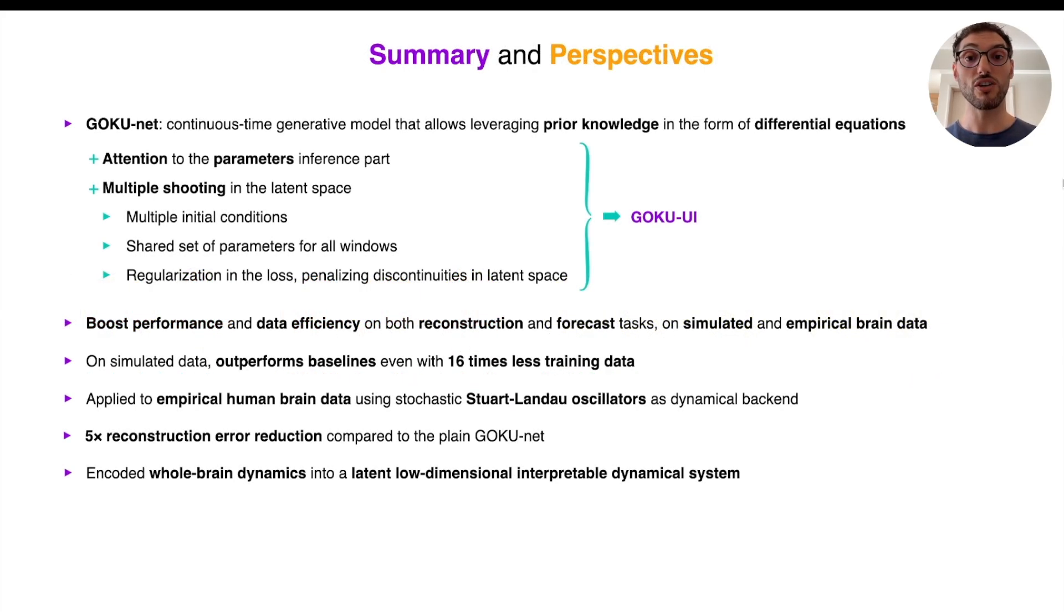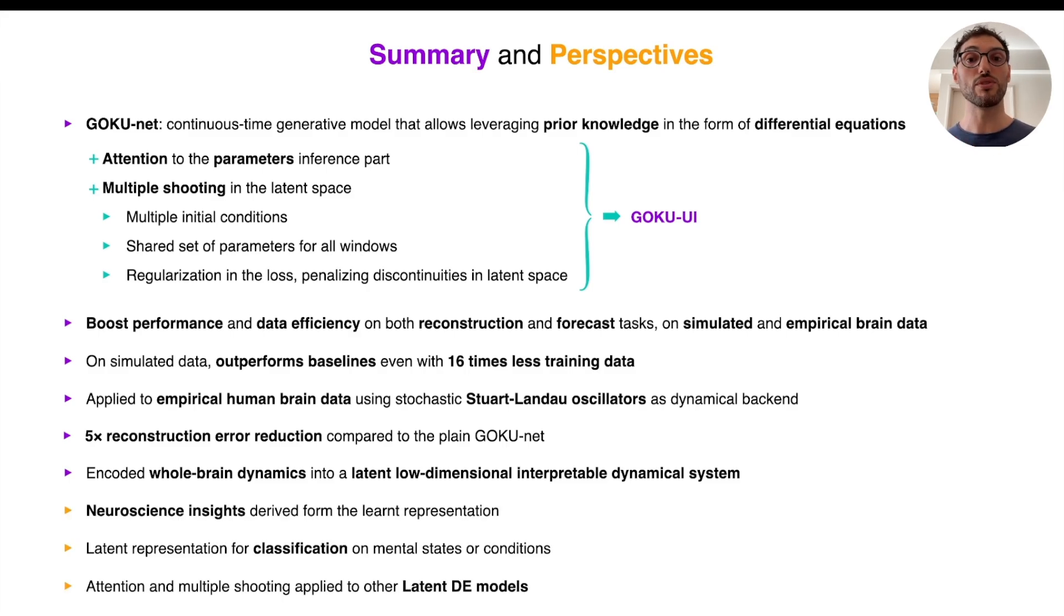Well, in summary, we have significantly enhanced GokuNets by adding an attention mechanism to the part of the model that learns the parameters, and by developing a multiple shooting training strategy in the latent space, which uses multiple initial conditions but a shared set of parameters for all windows, and a regularization in the loss function penalizing discontinuities in the latent space. These enhancements have improved performance and data efficiency for both reconstruction and forecast tasks on simulated and empirical datasets. In the latter case, by using Stuart-Landau oscillators, we were able to encode the whole-brain dynamics into a latent, low-dimensional and interpretable dynamical system. In future work, we aim to leverage this representation to gain neuroscience insights, such as inferring functional connectivity or classifying mental states or conditions.